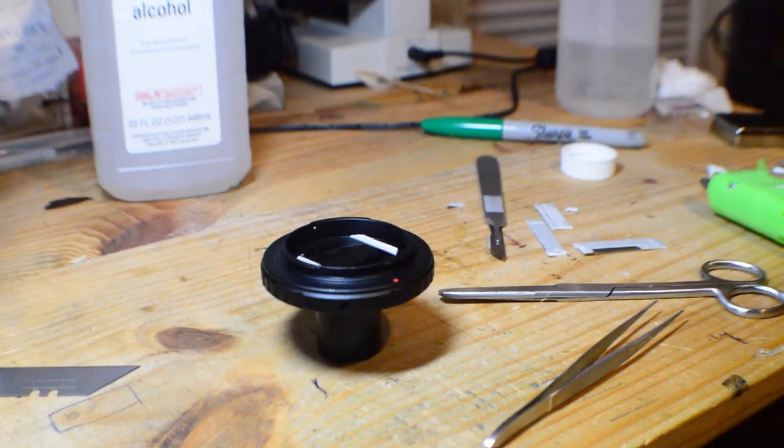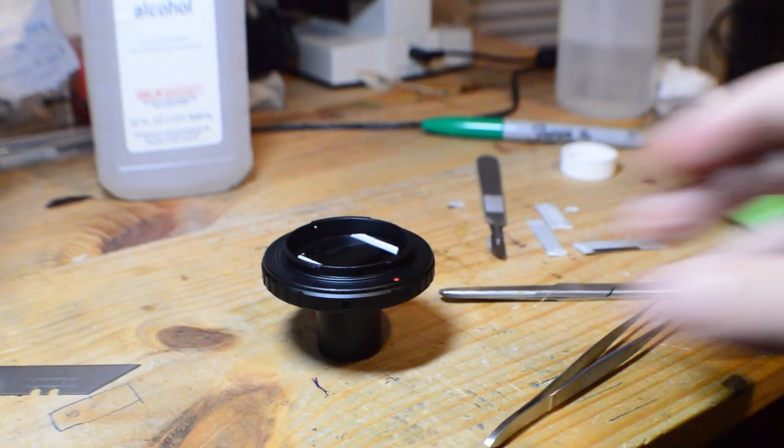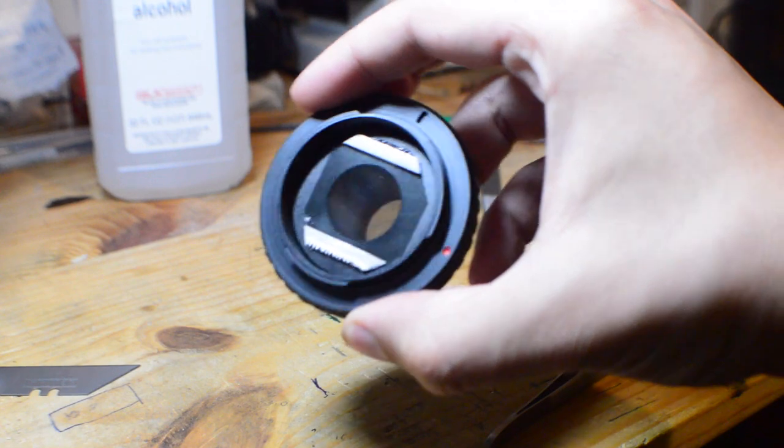However, it did let me show that the polarizers are definitely in place, as I can darken the view by turning the eyepiece. The other nice thing about putting the top polarizer where it is, is it means you don't need to modify any camera mounts.